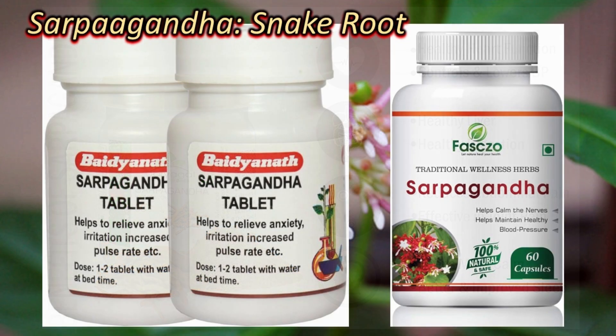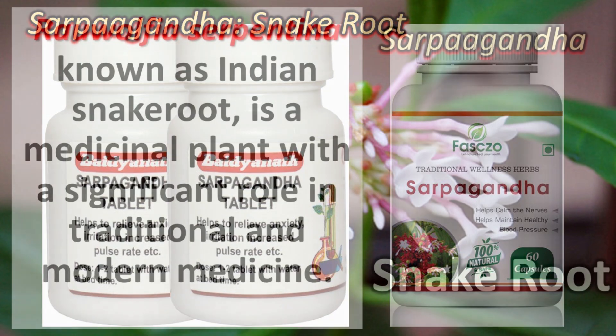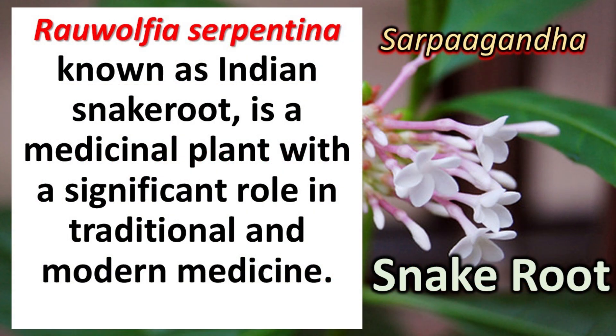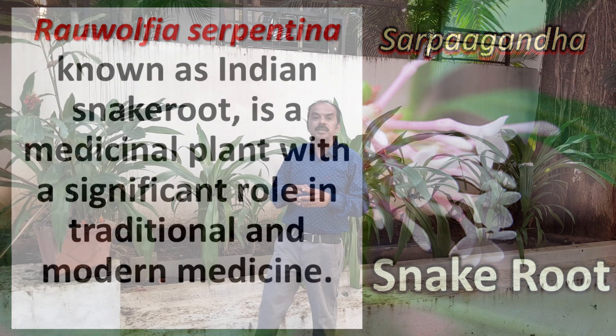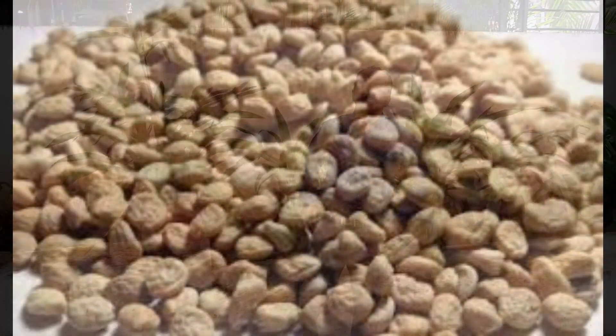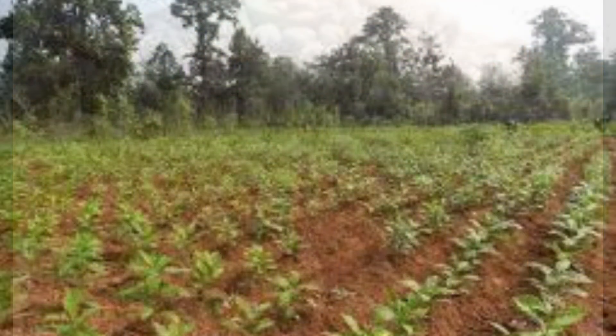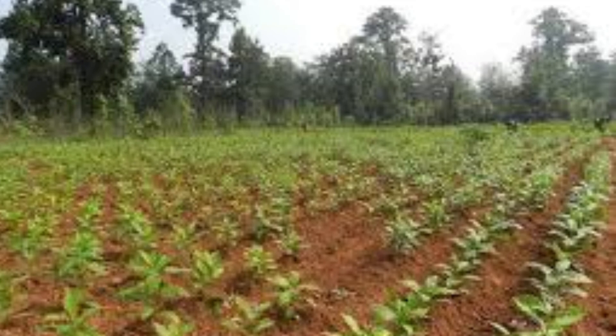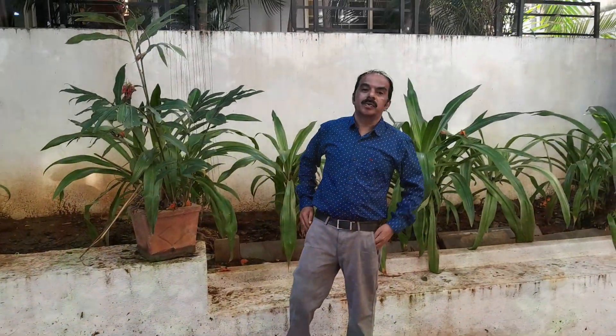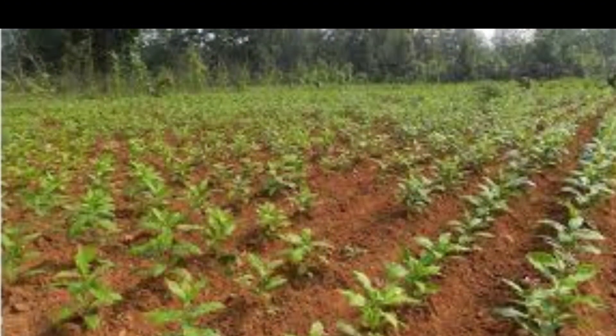Rauwolfia serpentina prefers well-drained sandy loam soils with slightly acidic to neutral pH. It thrives in tropical and subtropical climates with adequate rainfall and shade. The plant is propagated through seeds and cuttings. Seeds are sown in nursery beds or pots before being transferred to the field. Cultivation practices include soil preparation, planting, irrigation, and pest management.